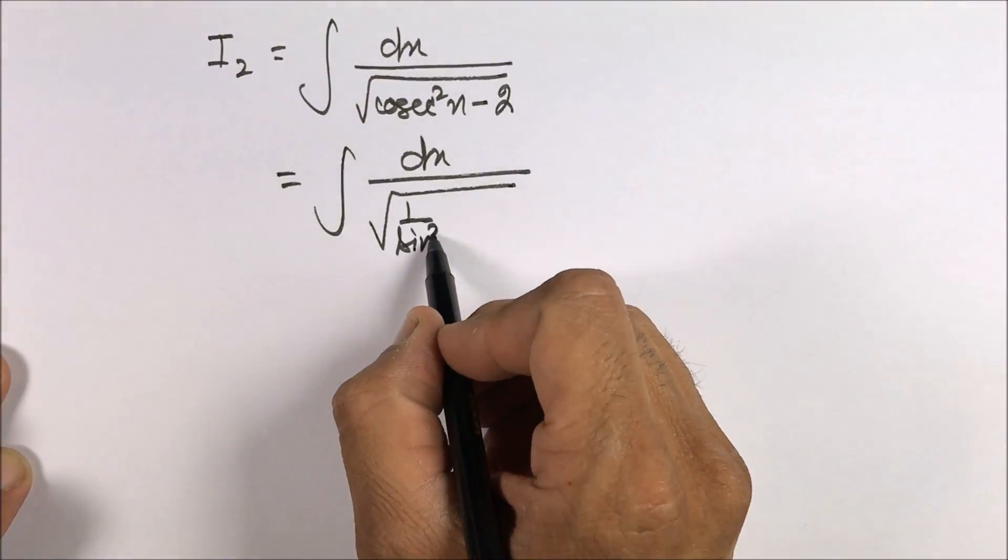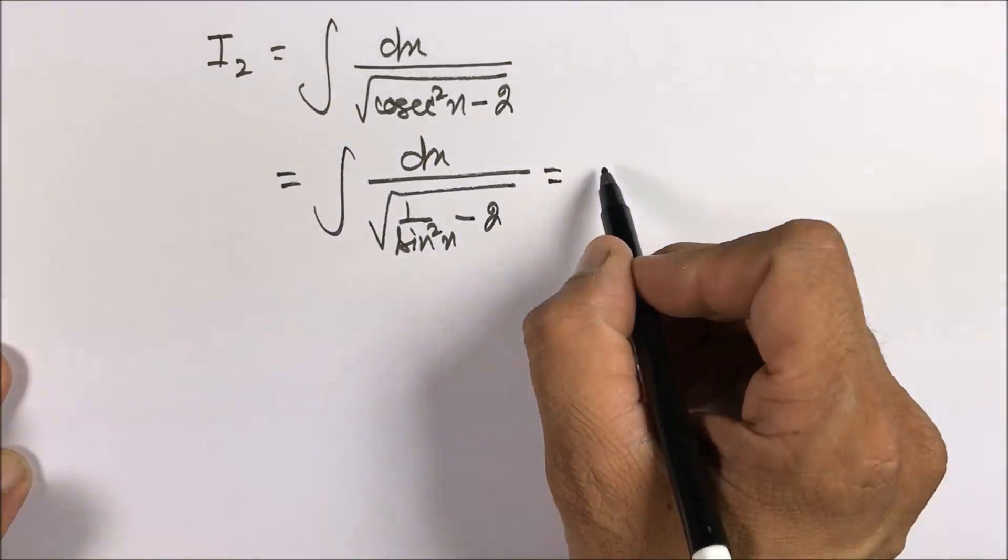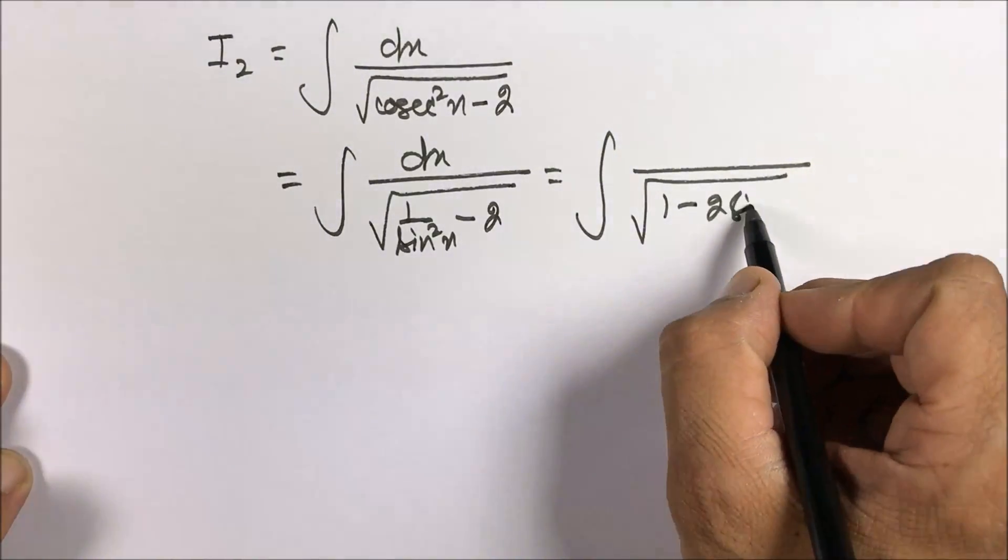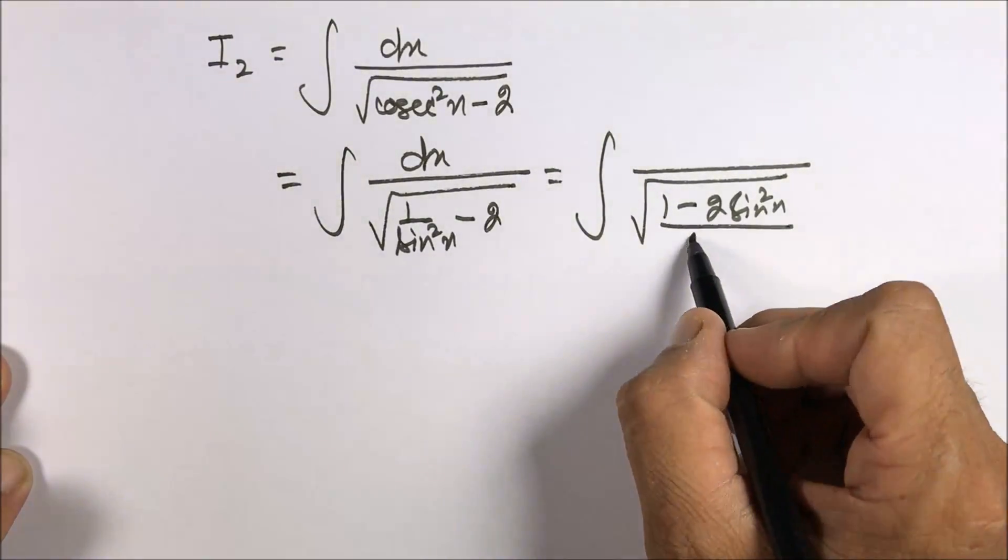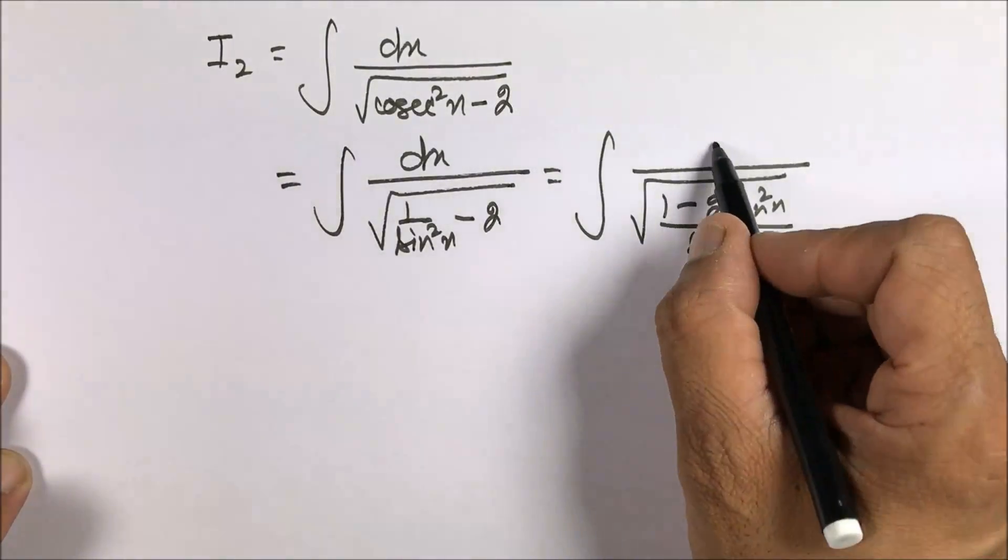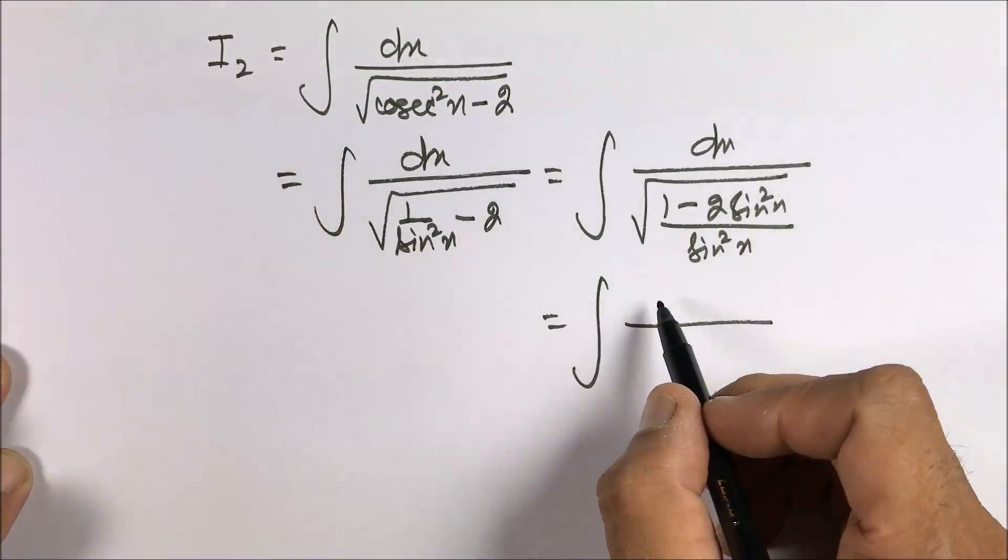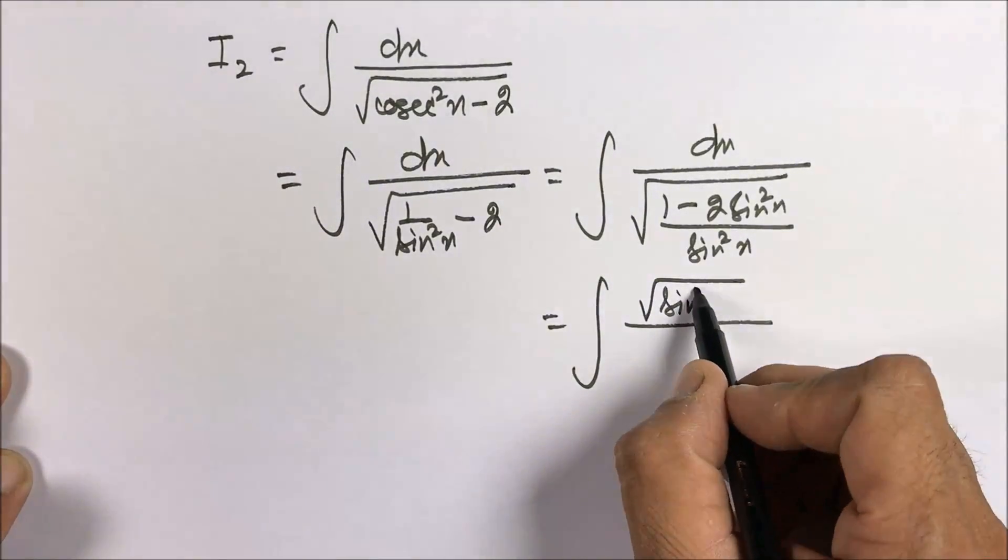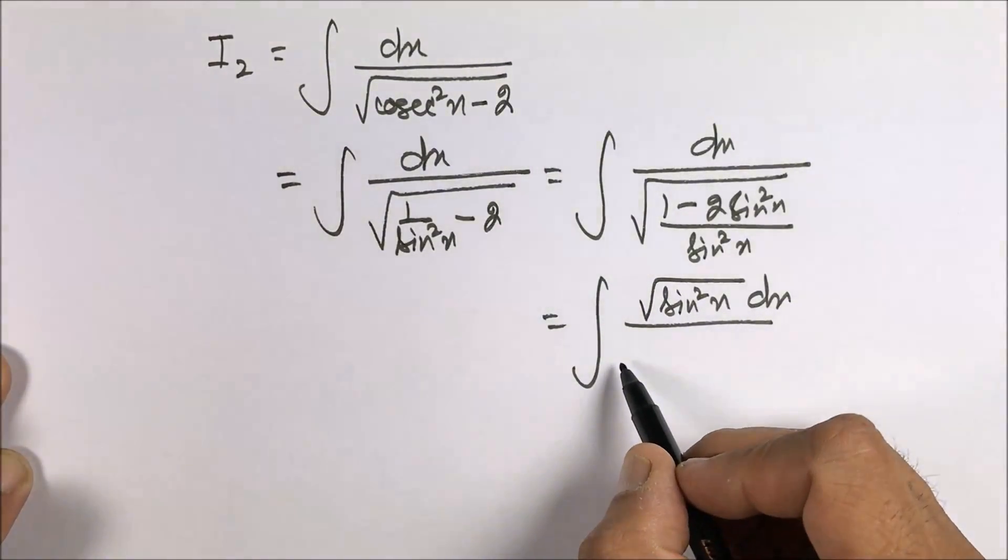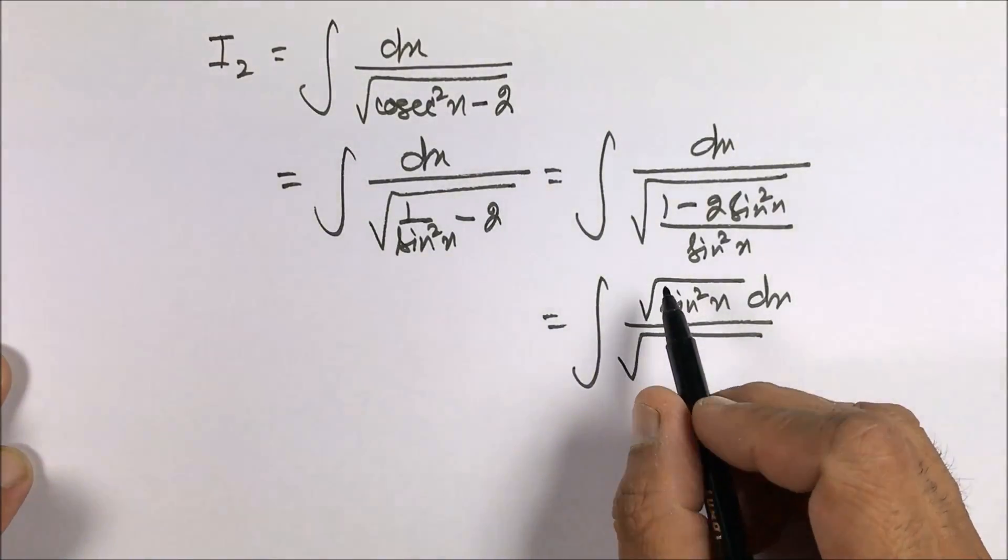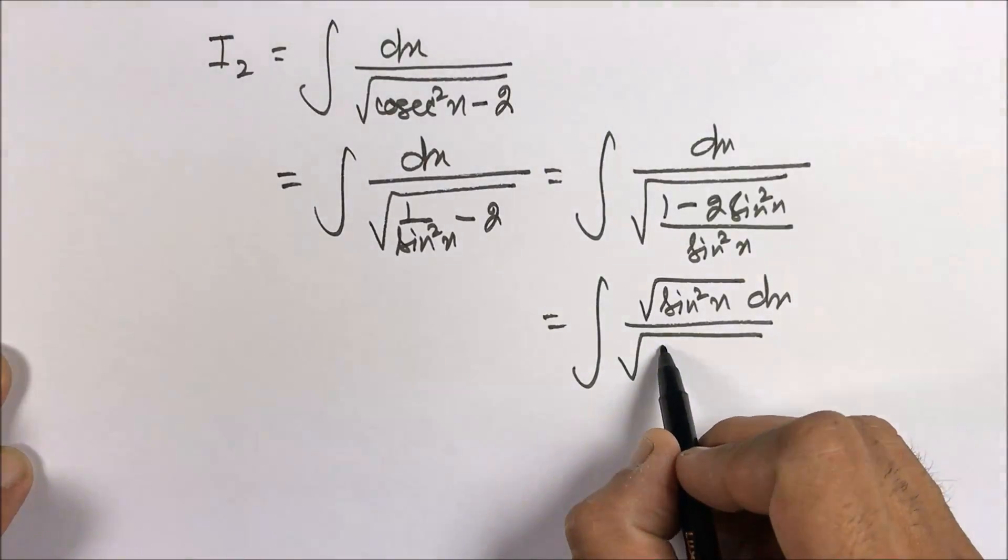You write cosecant square x as 1 by sine square x minus 2, you take the LCM. So it's kind of going nearer to the original question, but it's not the original question. With the effect of under root of sine square x dx, this will be sine x. The numerator will be sine x, and can you see that 1 minus 2 sine square x is cos 2x?